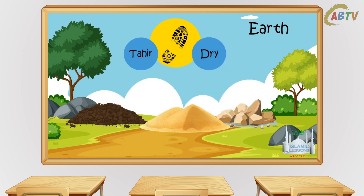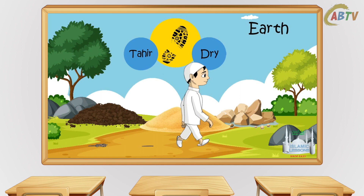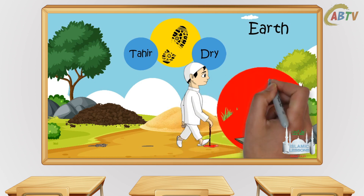The najasa came off by walking and the najasa came from the earth itself. For example, you were walking and stepped on feces that was already on the earth. The bottom of your shoe is najis. You walk or wipe it on the soil or sand until the najasa goes away. Now the bottom of your shoe is tahir. But if the najasa came onto the shoe that wasn't already on earth — for example, you were bleeding and it landed on the bottom of the shoe — the earth cannot make it tahir.